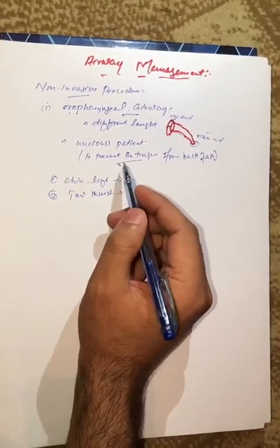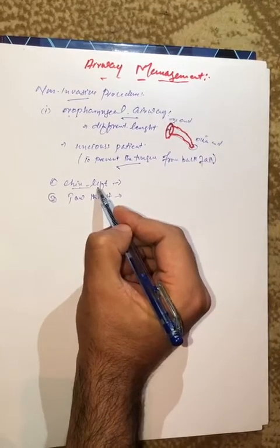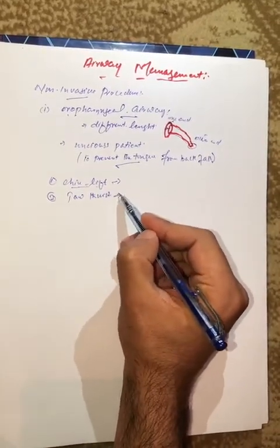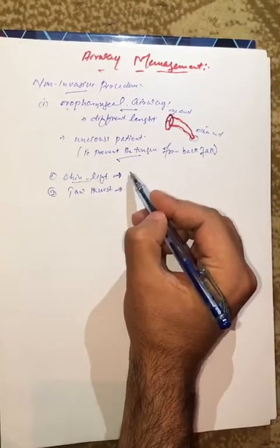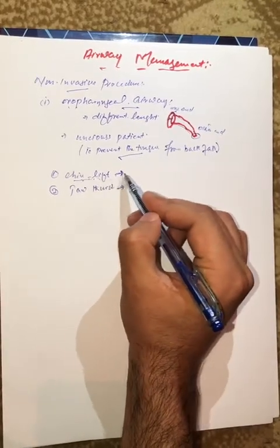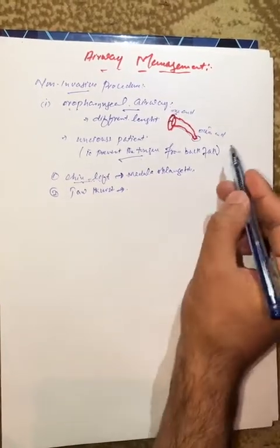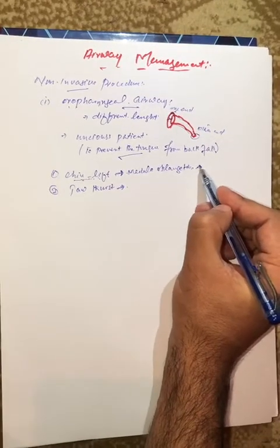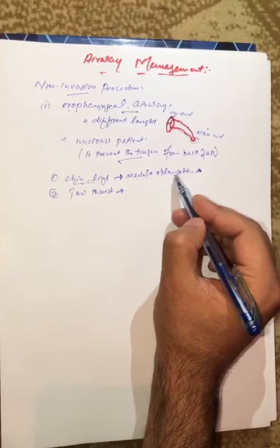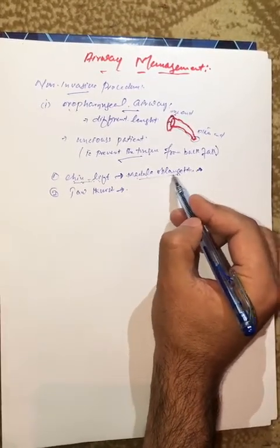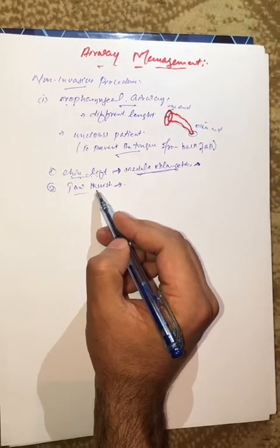Always remember: the chin-lift procedure is done in the patient without cervical spine injury, while jaw-thrust is done in the patient with cervical spine injury. The chin-lift is contraindicated in cervical spine injury because near the cervical spine there is the medulla oblongata, which contains the breathing center. Performing chin-lift in cervical spine injury could disturb the breathing center and further complicate the breathing process. Jaw-thrust is therefore preferable in cervical spine injury.